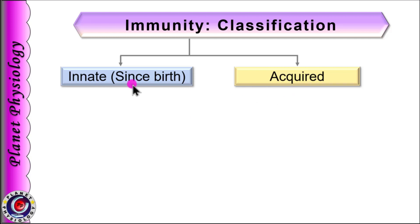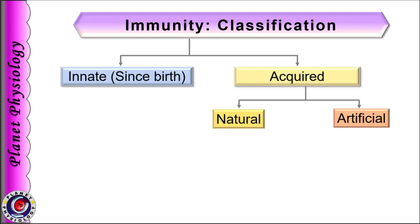Innate immunity is present since birth of a person, whereas acquired immunity develops after birth due to exposure of the body to the pathogens. Our body may be exposed to the pathogens naturally — we are always surrounded by various pathogens. If any of these pathogens succeed in entering the body, it will activate the immune system. This is naturally acquired immunity.